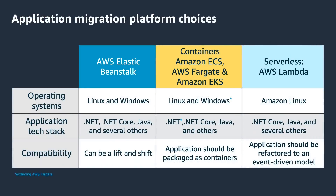When it comes to platform choices on AWS, for compute we have services like Elastic Beanstalk — popular for moving middleware and web applications into the cloud, supporting Linux and Windows. The most popular choice is containers: AWS offers Amazon EKS, ECS, and Fargate. We see many customers moving applications into containers because they can't find installation binaries, so we containerize those workloads. And if you're doing a complete refactoring, you can go fully cloud-native on AWS.